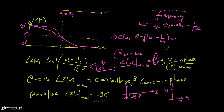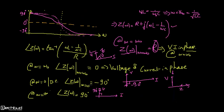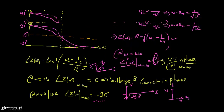When voltage is lagging behind the current by 90°, it means the circuit is fully capacitive — Xc will be dominant and XL is effectively zero, so it is definitely a capacitive circuit.